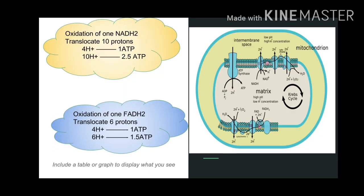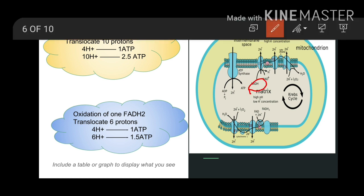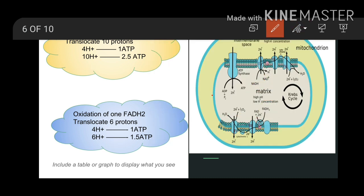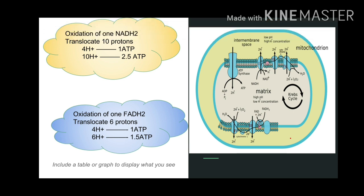As shown on this slide: oxidation of NADH has electrons flowing through Complex I, Complex III, and Complex IV, giving ten protons translocated; whereas oxidation of FADH2 flows through Complex II, Complex III, and Complex IV, giving six protons translocated. Now, since four protons make one ATP: ten protons will make 2.5 ATP, and six protons will make 1.5 ATP. This is simple unitary method. So we can say that oxidation of one NADH produces 2.5 ATP, and oxidation of FADH2 produces 1.5 ATP. This is how we determine the number of ATPs formed during oxidation of NADH and FADH2.